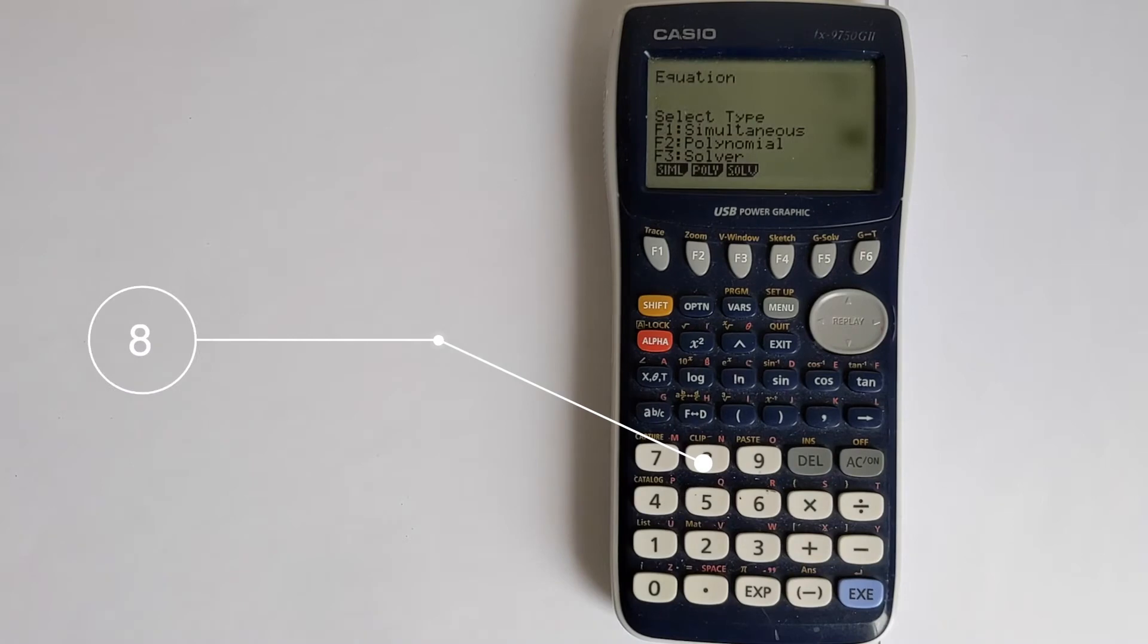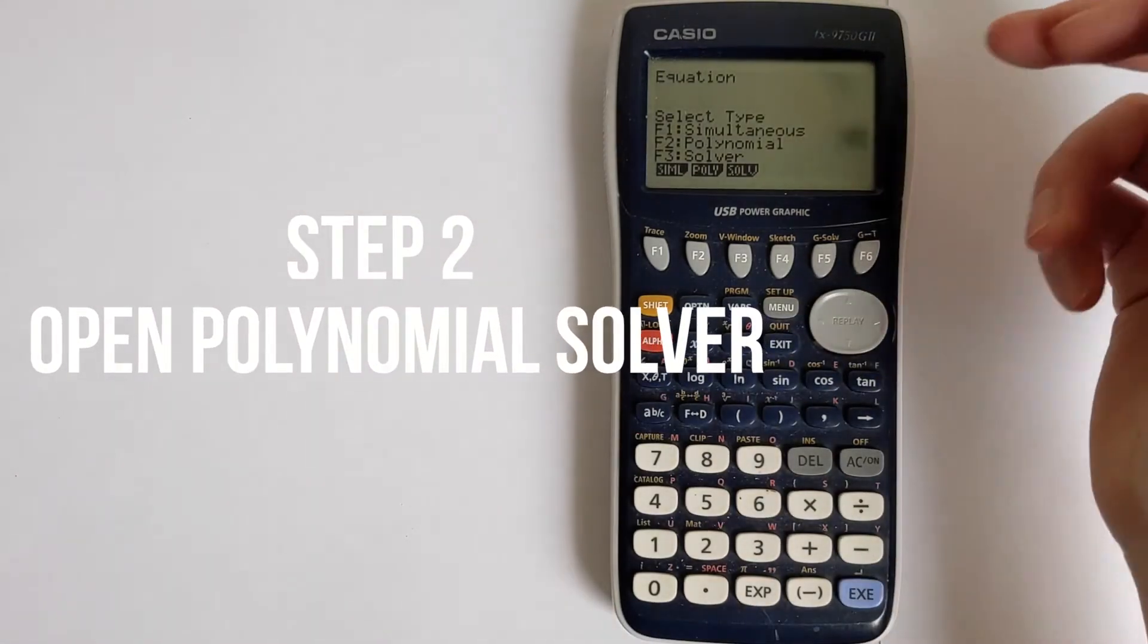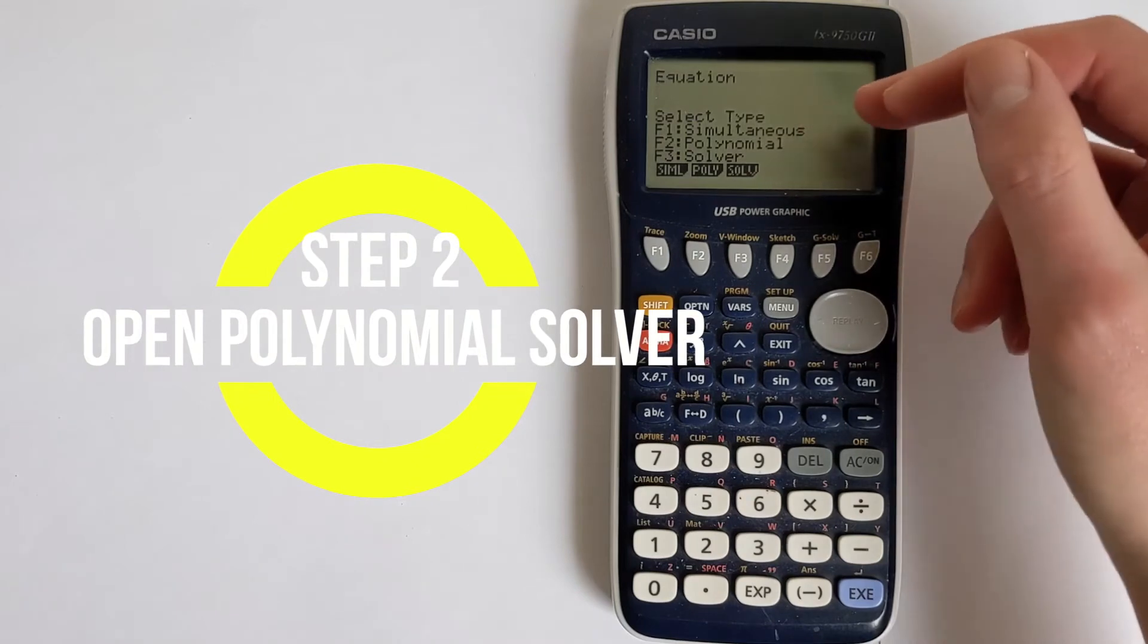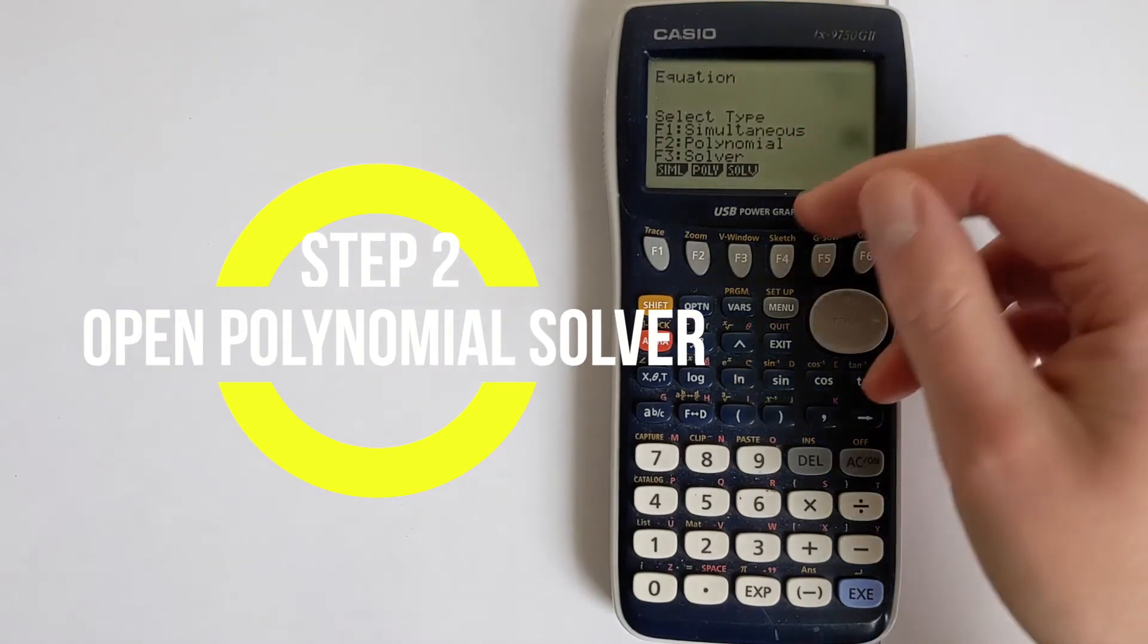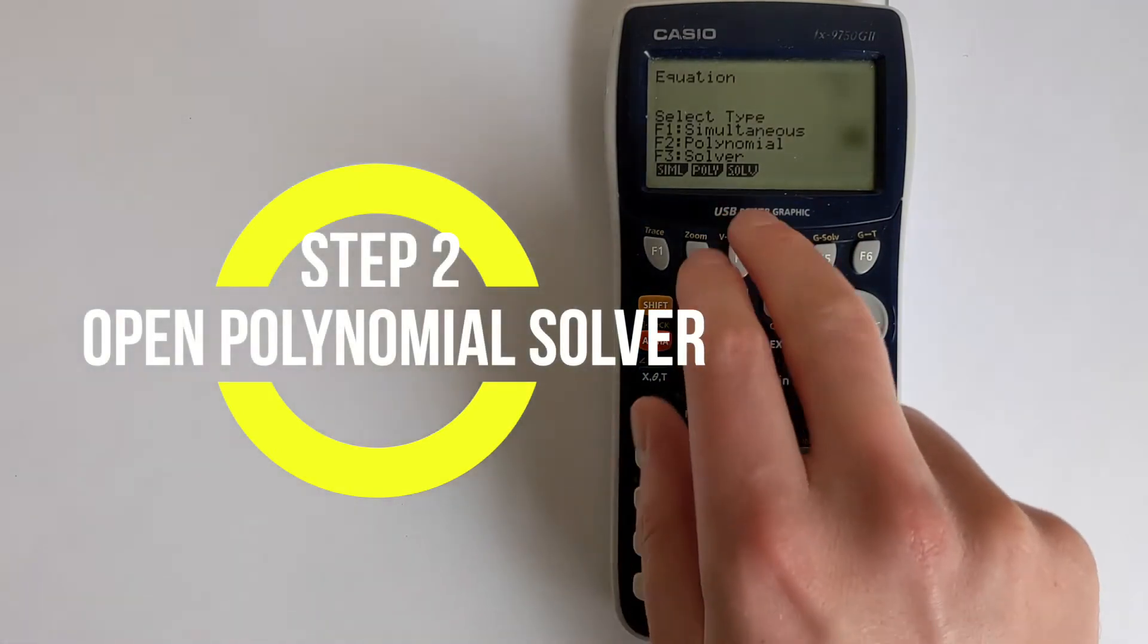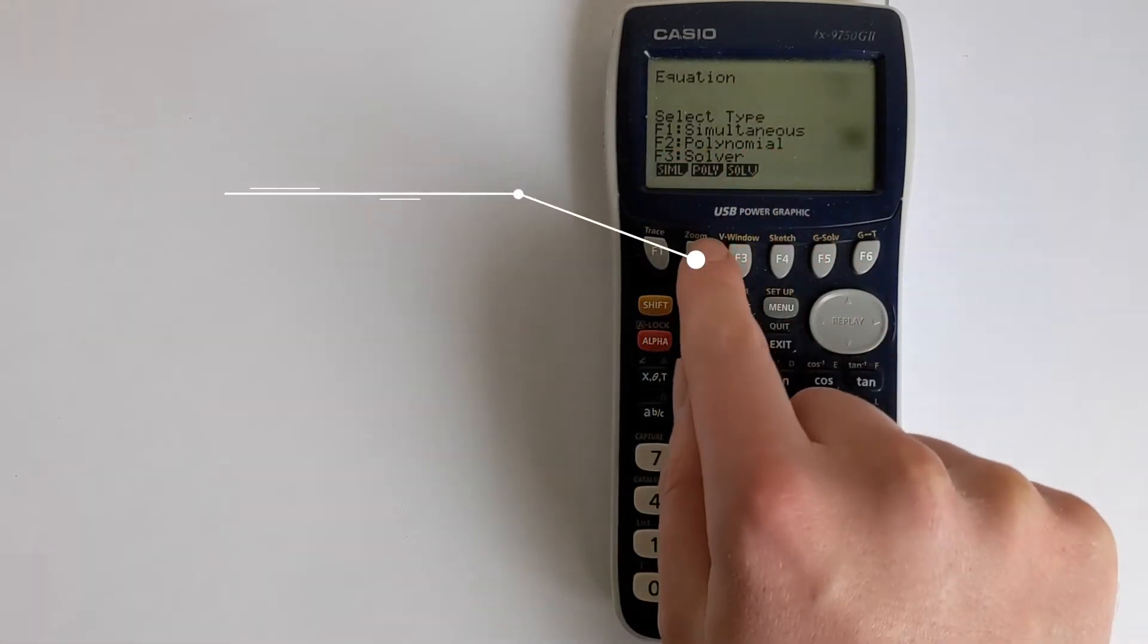that will open up your various equation solvers to choose from. If you want to solve simultaneous equations, you would use F1. Polynomial solver is the one that you want, and there's also another solver for solving other types of equations. We're going to choose F2 for the polynomial solver.